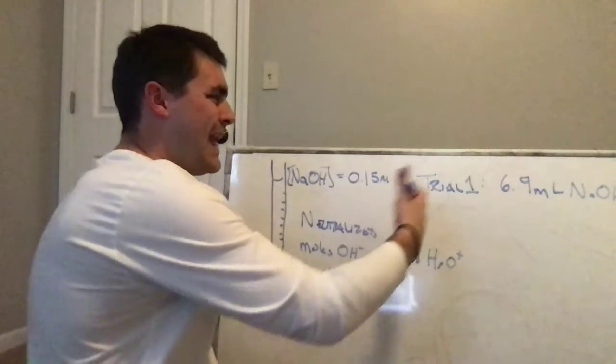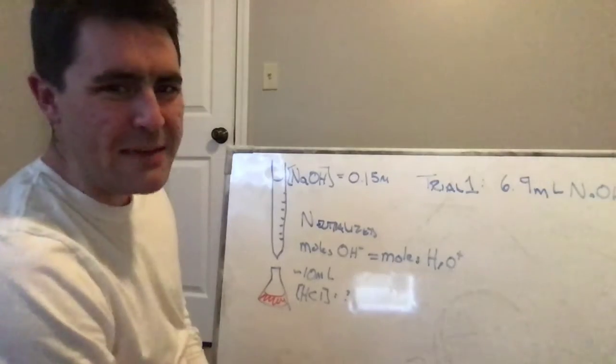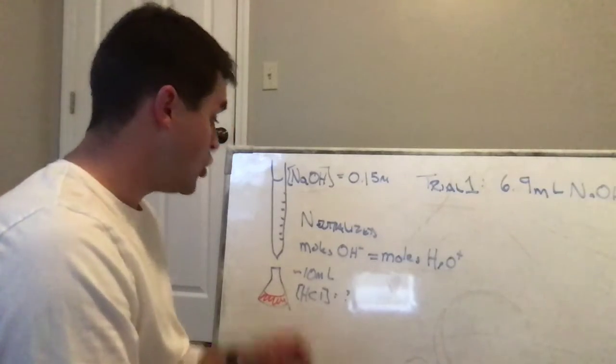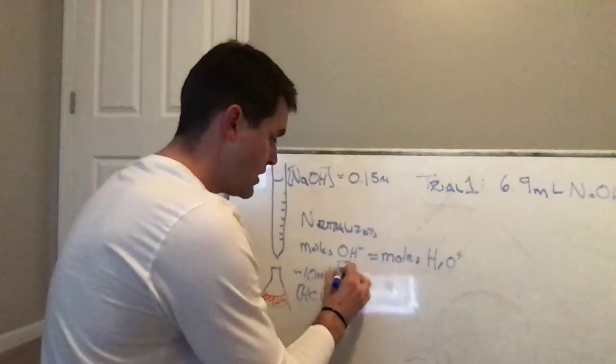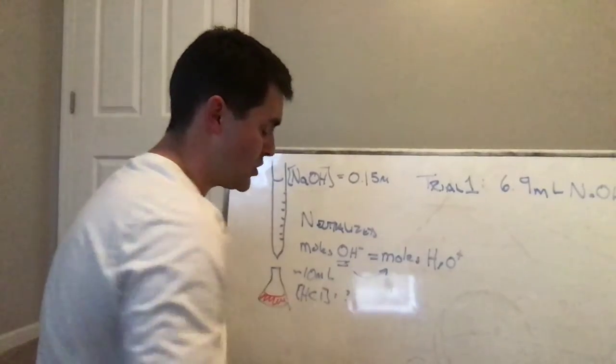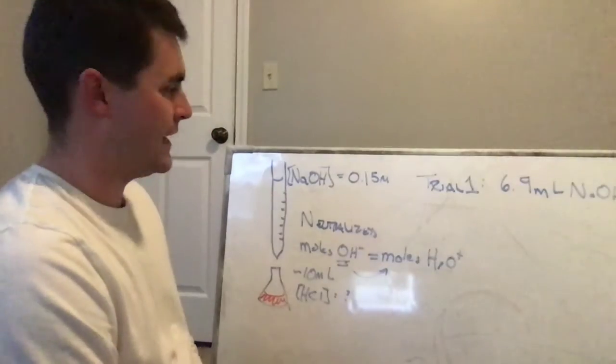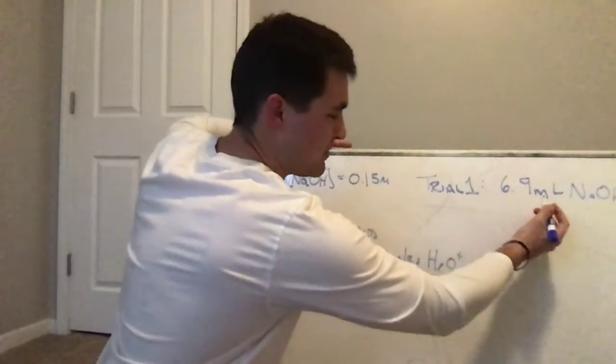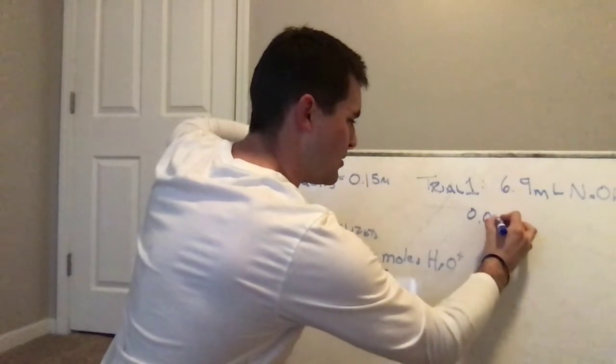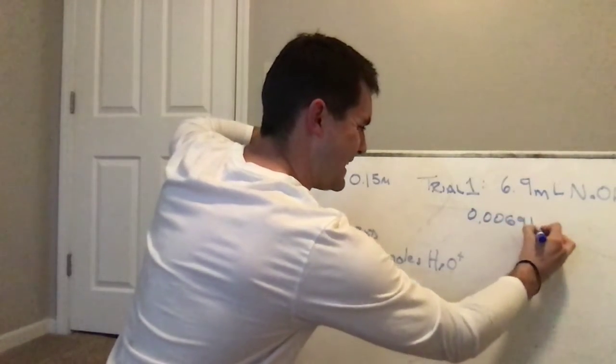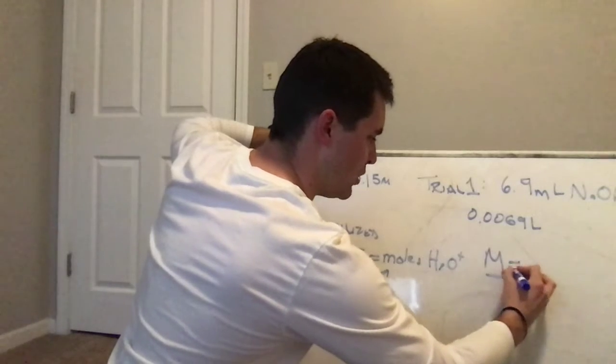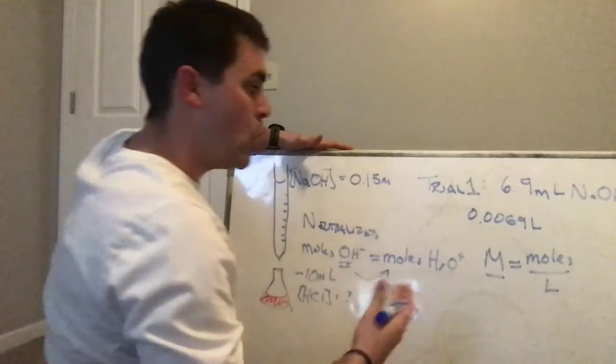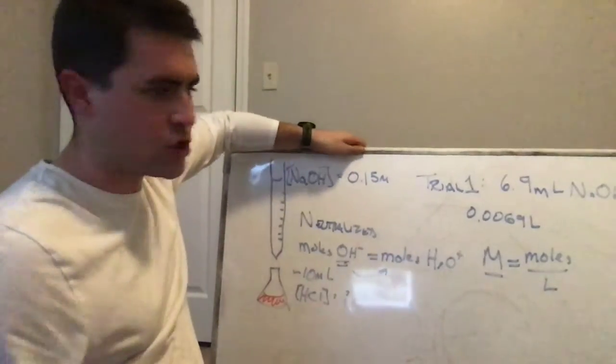So from the concentration and from the volume, we should be able to calculate the number of moles that were used to neutralize the reaction. Again, once we know the moles of base used, we can figure out the moles of H3O+ that were neutralized in our reaction. So let's try that. In terms of milliliters, let's go ahead and make that into liters. Let's go 0.0069 liters.